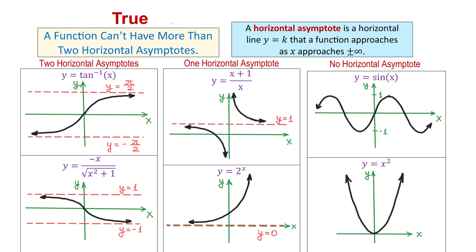Now let's see why a function cannot have more than two horizontal asymptotes. This is because horizontal asymptotes describe the behavior of a function at positive infinity and negative infinity. So we have only two directions — to the right and to the left — meaning a function can have a maximum of two values that it can approach.